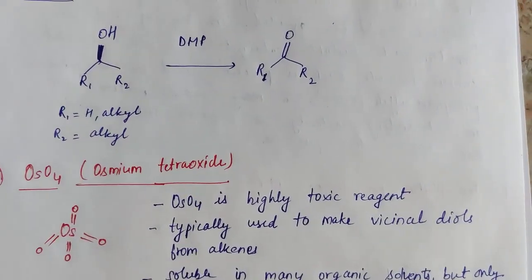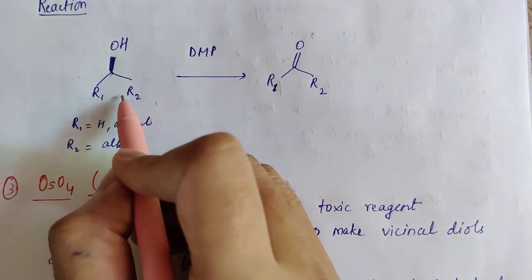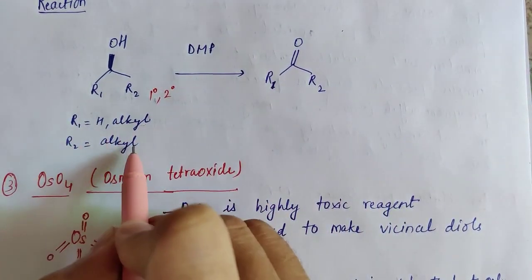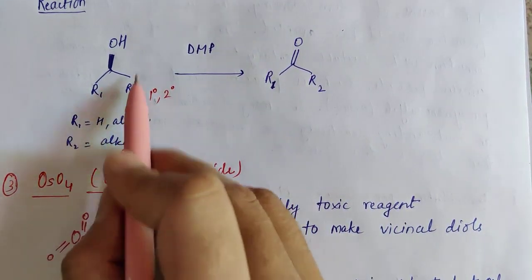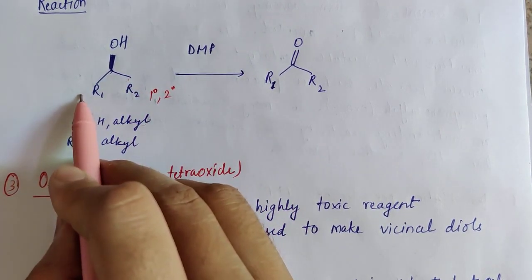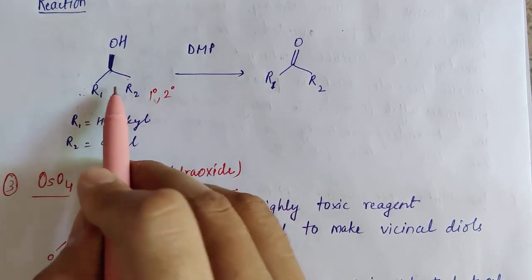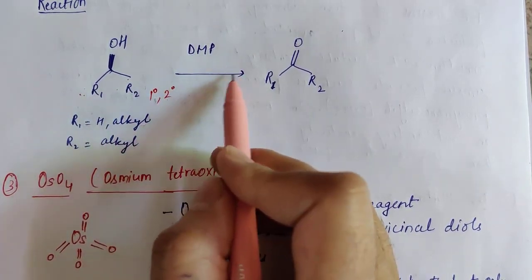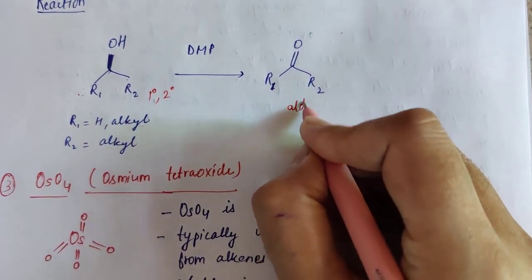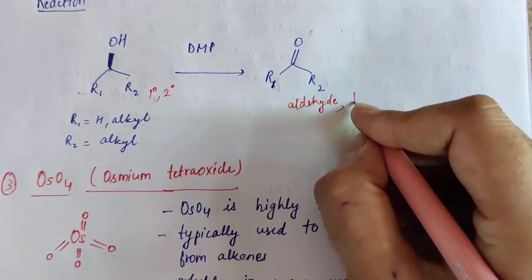Looking at the reaction: the substrate is an alcohol — it could be primary or secondary. From the R groups we can identify — the second R group will always be an alkyl group, and the first could be a hydrogen or alkyl, meaning it could be a primary or secondary alcohol. When treated with DMP, primary alcohol gives aldehyde and secondary alcohol gives ketone.